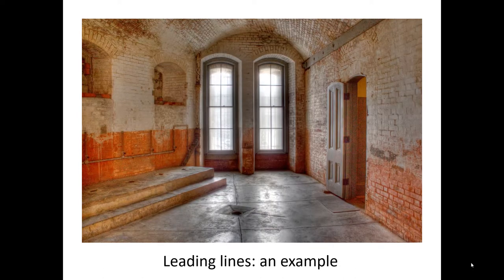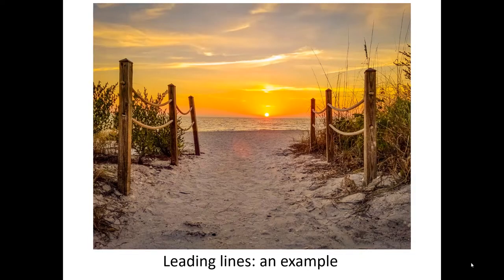Another example of leading lines is this photograph where the primary subject is the windows in the back. The floor, the interface between the floor and the wall on the right, and the bottom part of the steps all form lines that lead our eye to the windows. Here's a picture of a sunset where the bottoms of the posts lead our eye at a diagonal towards the sun.